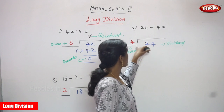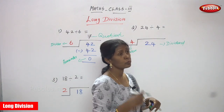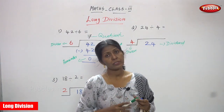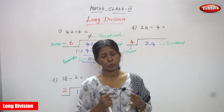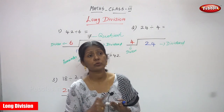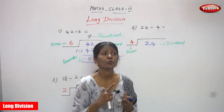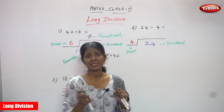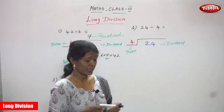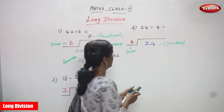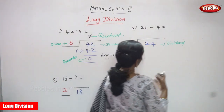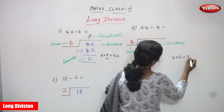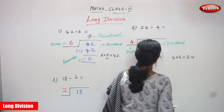So 24 is going to be divided by 4. You must use the 4th table up to 24. So 4 1s are 4. 4 2s are 8. 4 3s are 12. 4 4s are 16. 4 5s are 20. And 4 6s are 24.